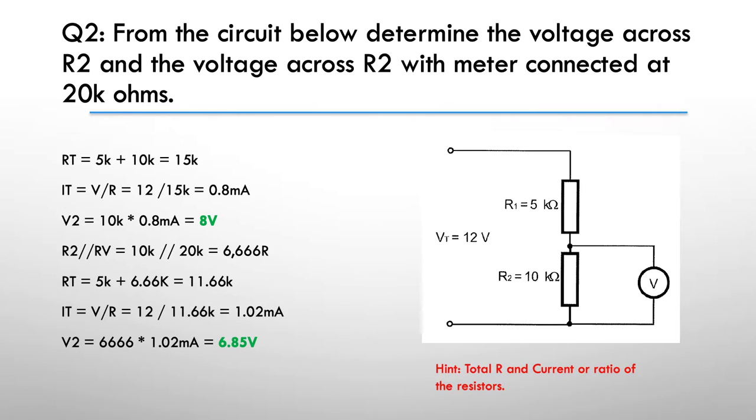Here's how I did it. I worked out what the R total was, and you can see up here we've got 15k total. That's pretty obvious: 5 plus 10 is 15k. I worked out the current total, so V over R giving me 8 milliamps.